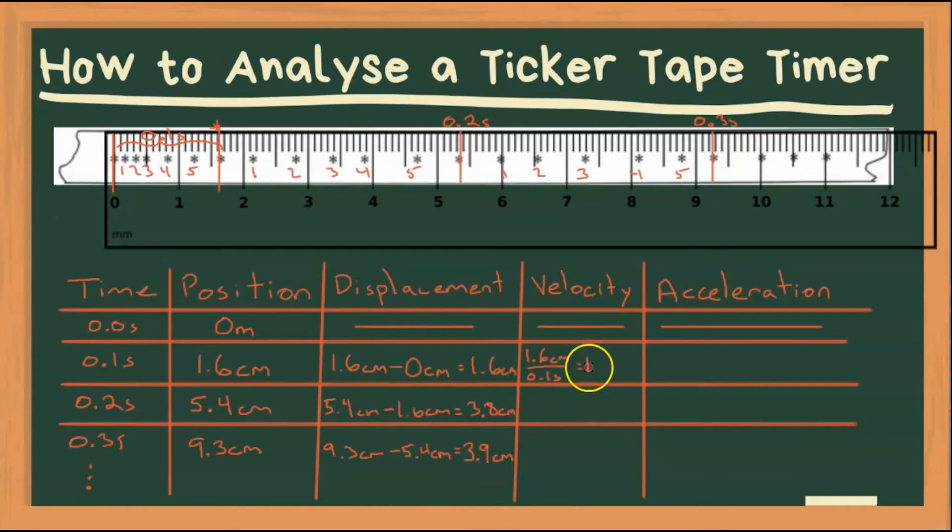And we can do the same thing for the other displacements. So 3.8 divided by 0.1, because from 0.1 to 0.2, 0.1 seconds pass. So that will be 38 centimeters per second. And again, 39 centimeters per second.